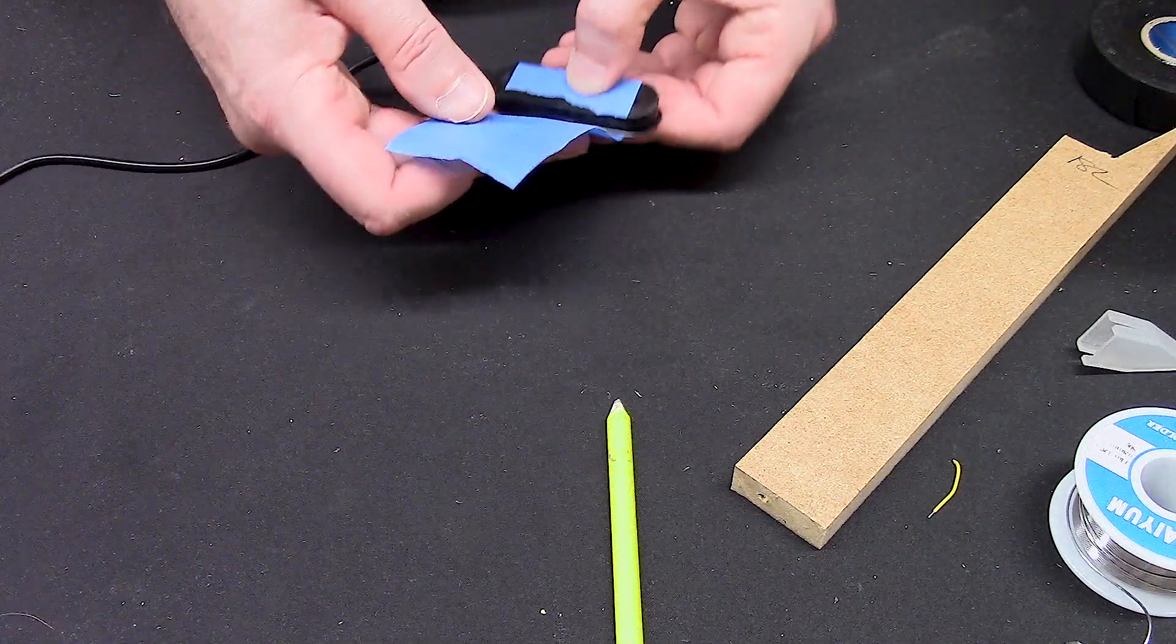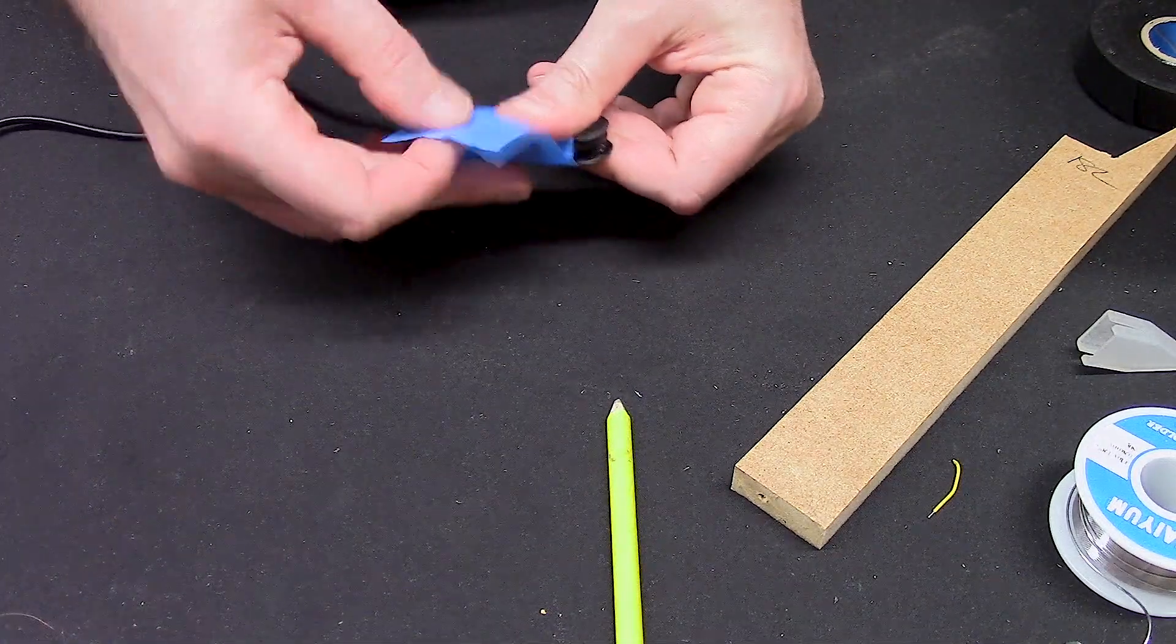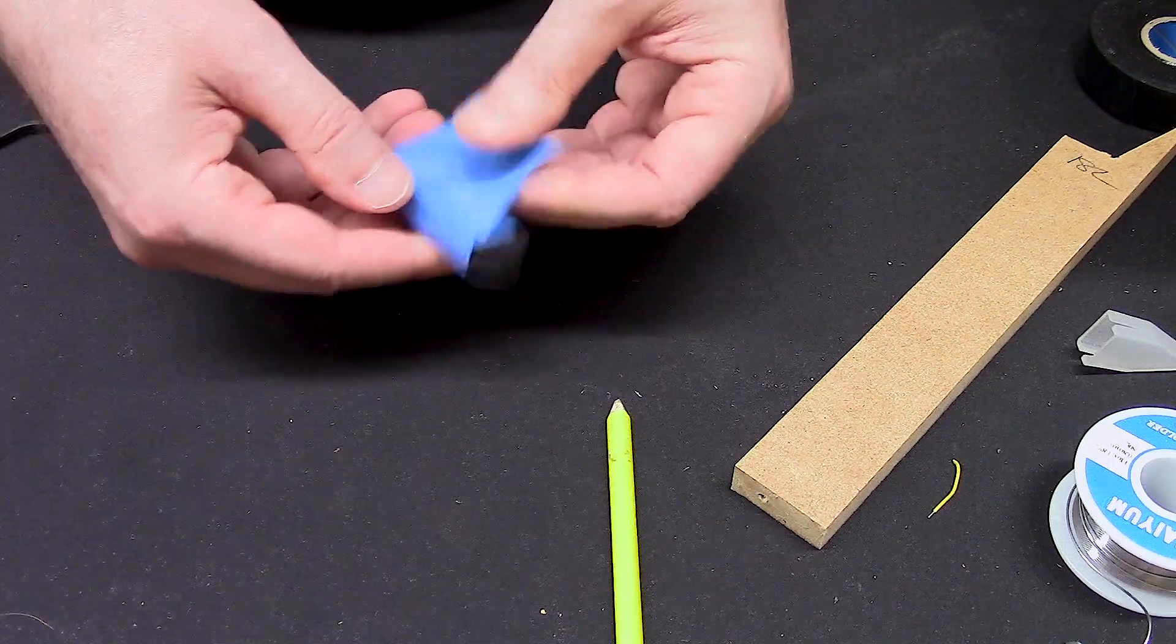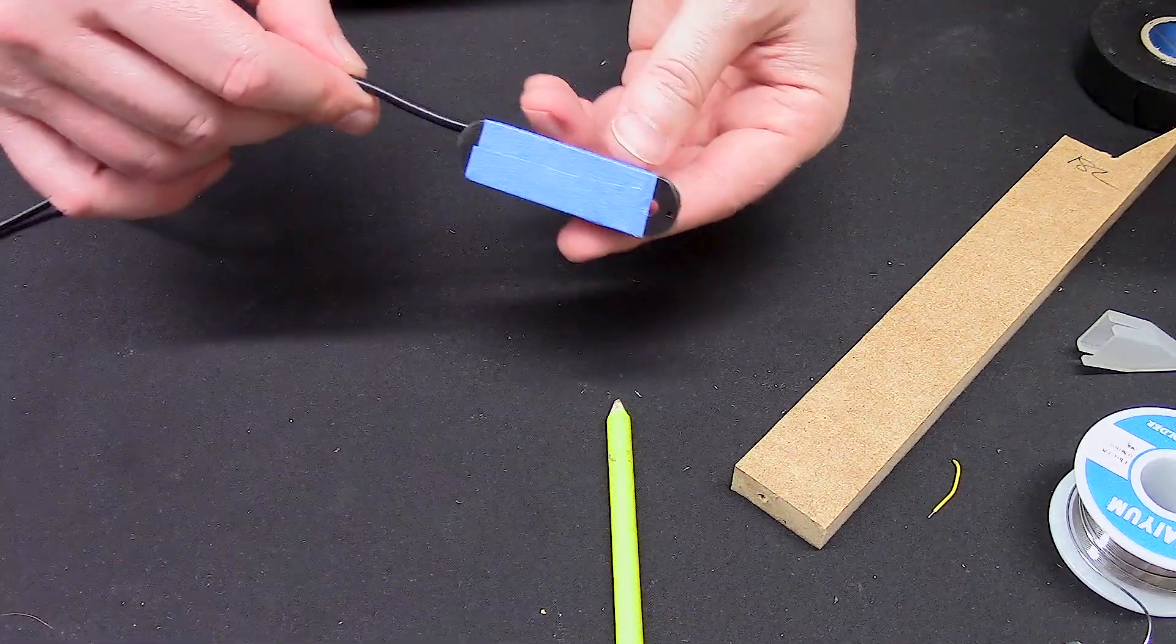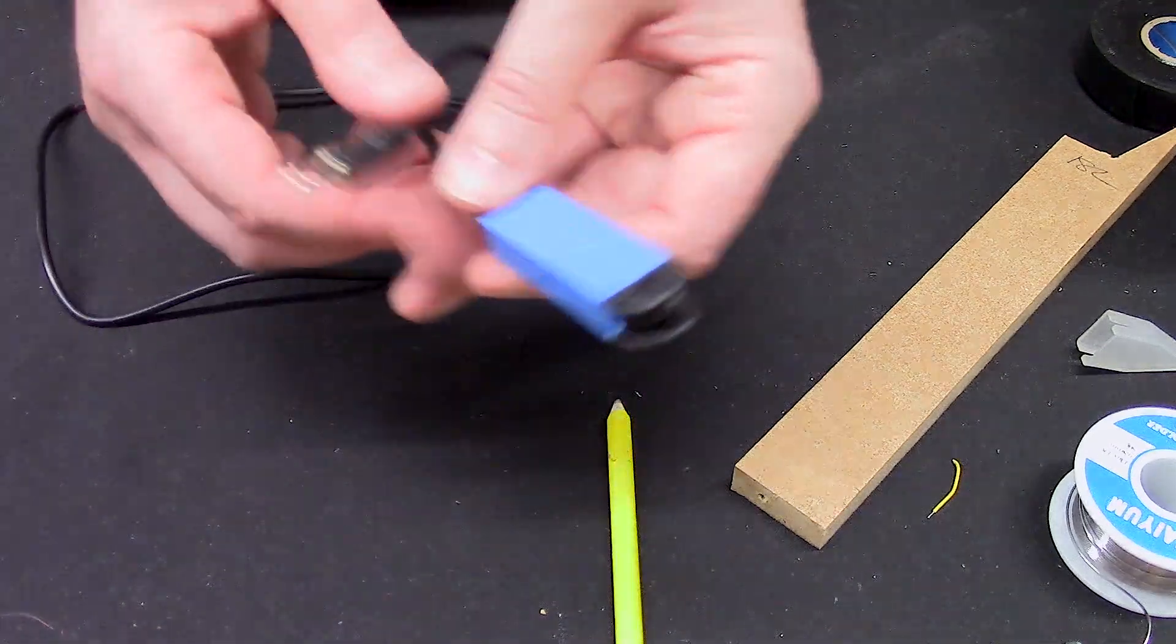So I'm using some two inch wide, I think it is, masking tape just to wrap around. Again, this is some protection for everything that we've just done. Kind of pretty simple. Now it's about time for testing.